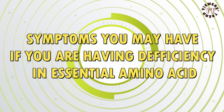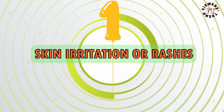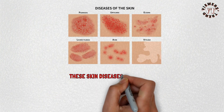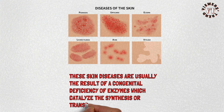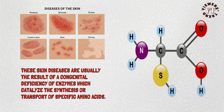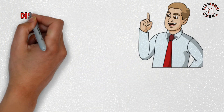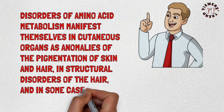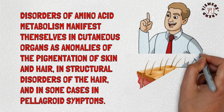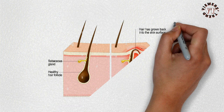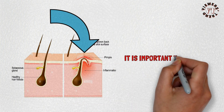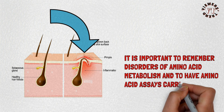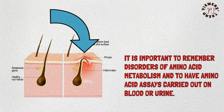Symptoms you may have if you are deficient in essential amino acids. 1. Skin Irritation or Rashes. These skin diseases are usually the result of a congenital deficiency of enzymes which catalyze the synthesis or transport of specific amino acids. Disorders of amino acid metabolism manifest in cutaneous organs as anomalies of the pigmentation of skin and hair, structural disorders of the hair, and in some cases pellagroid symptoms. In patients with congenital structural disorders of the hair, it is important to consider disorders of amino acid metabolism and to have amino acid assays carried out on blood or urine.